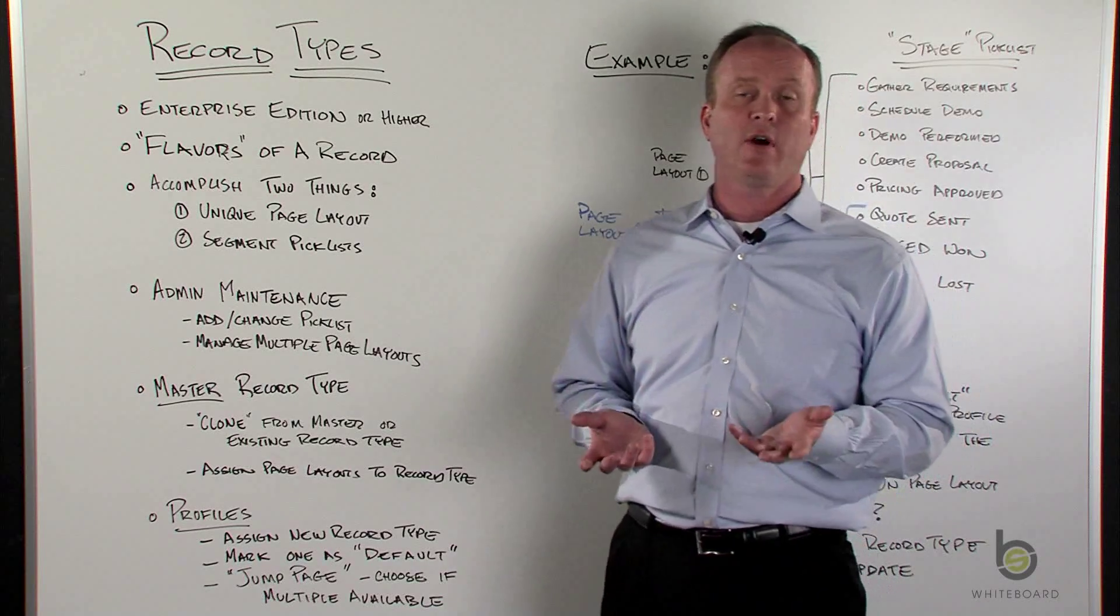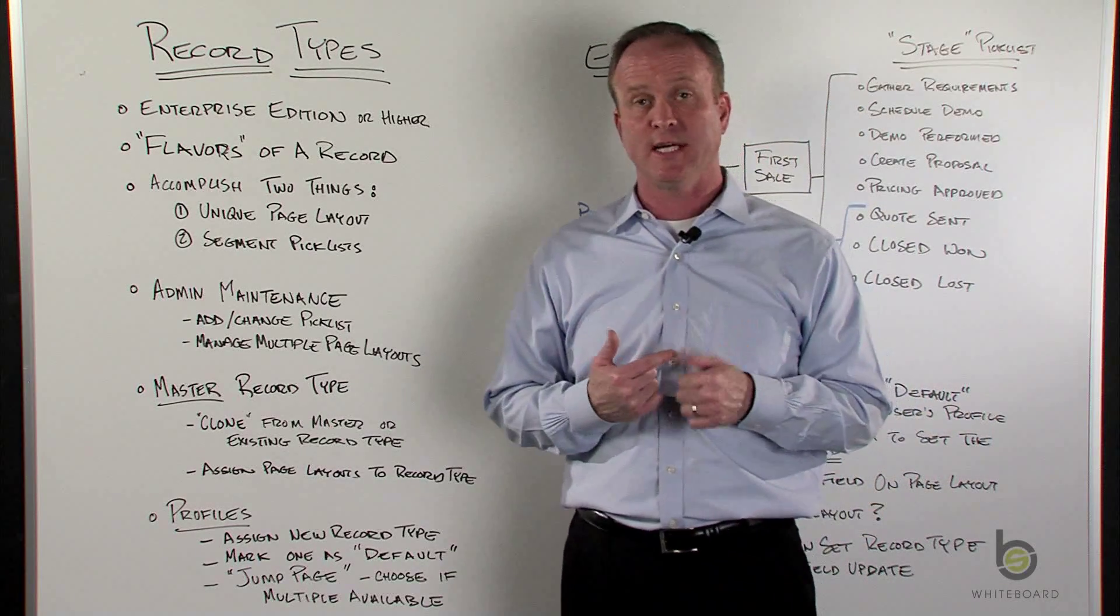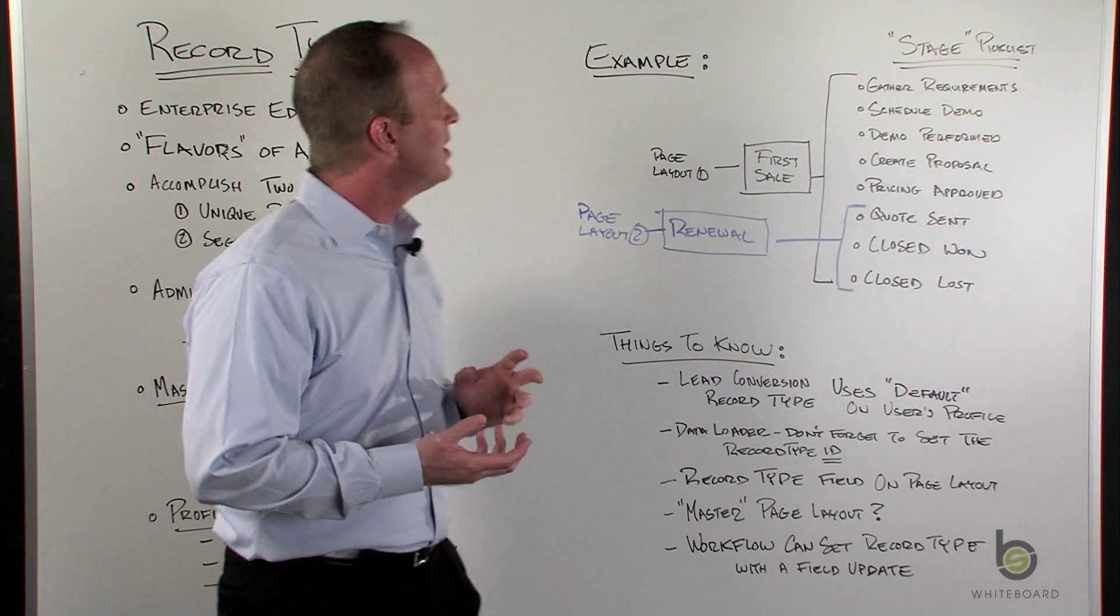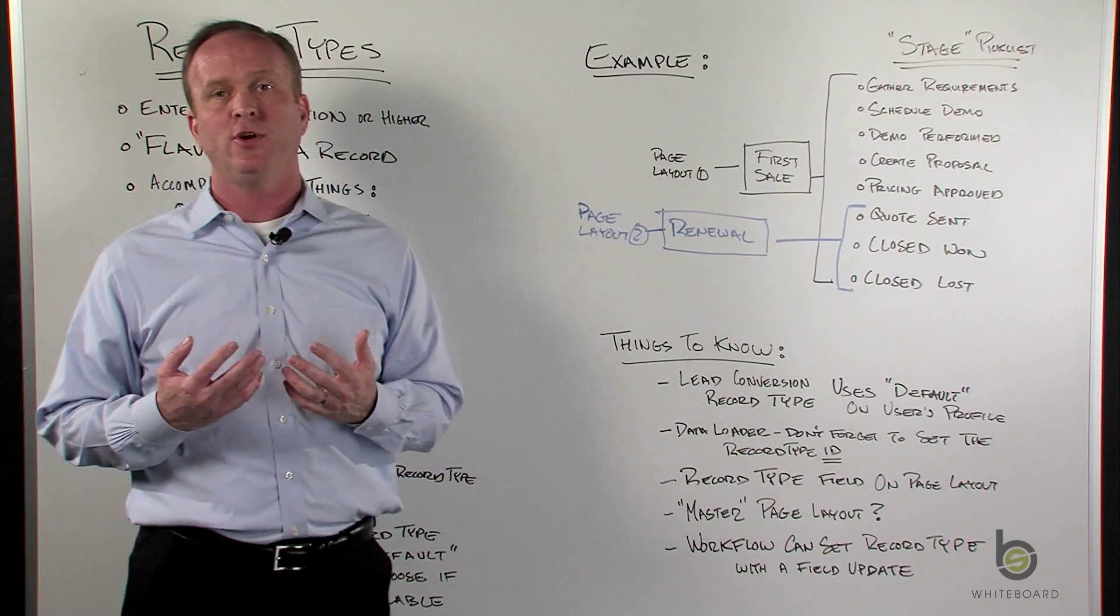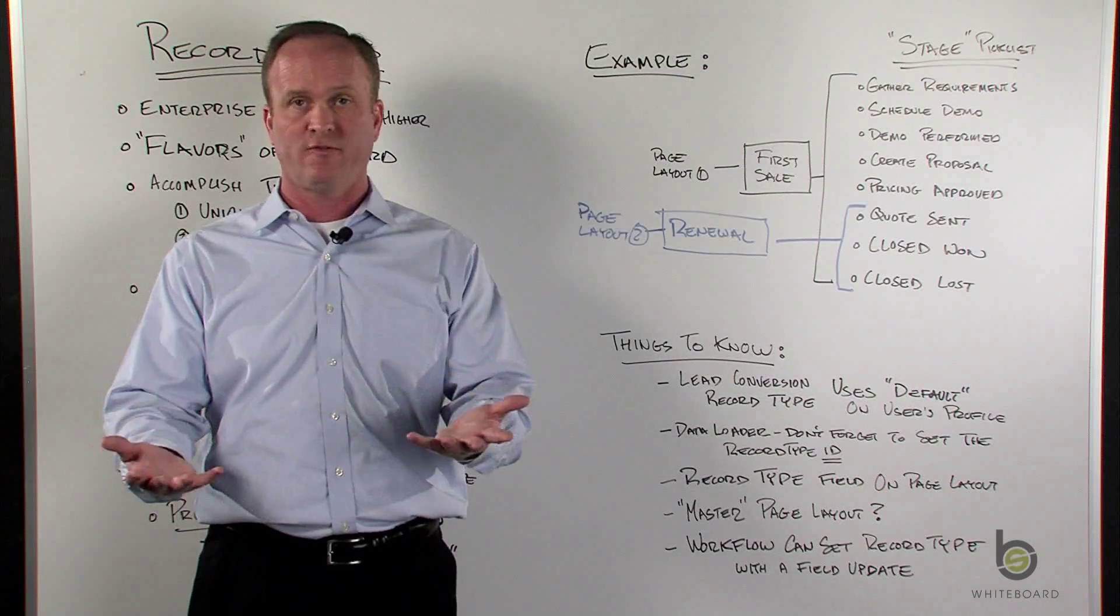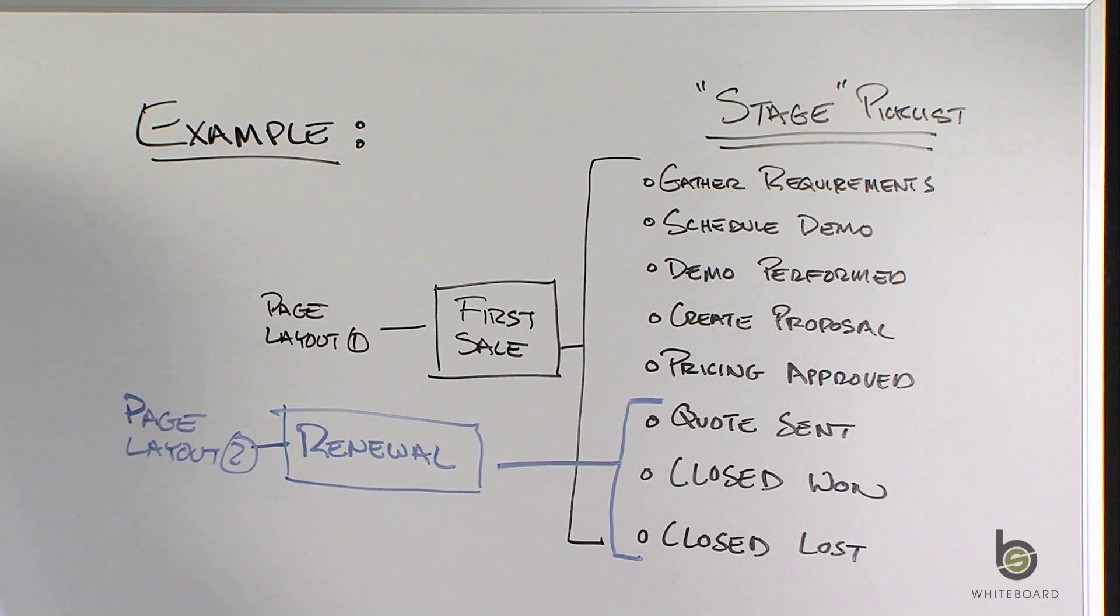Okay, now that we've covered profiles, let's take a real world example and see how this kind of comes together. So the example that I'm laying out in front of us is the Opportunity Stage. It's a picklist that you're very familiar with. It defines your sales process.